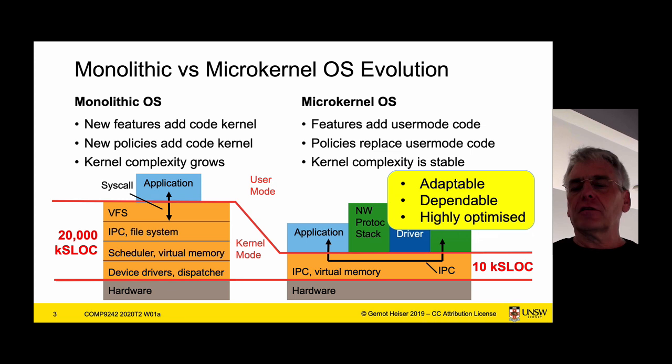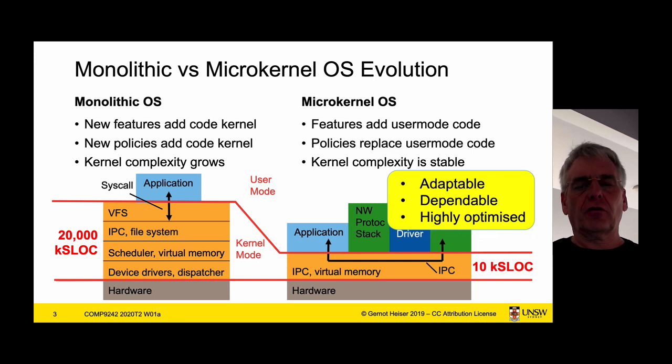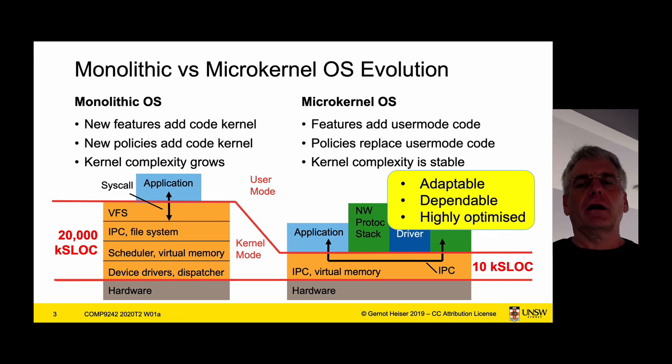Because you have such a small code base, it's easier to optimize — you can basically optimize the hell out of this small code base and make it as fast as possible, in a way that's not feasible for something like Linux. And because you can grow functionality by adding things on top, it's more adaptable. And because of the hugely reduced number of bugs, it's also more dependable.